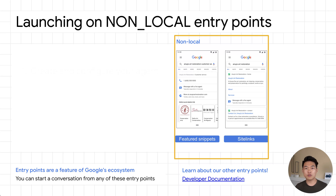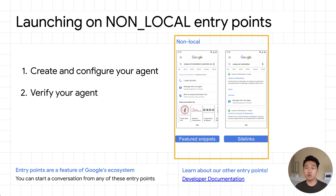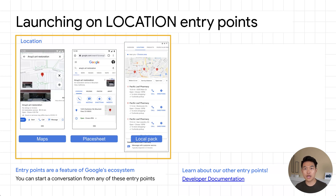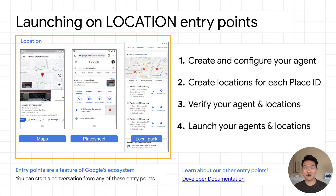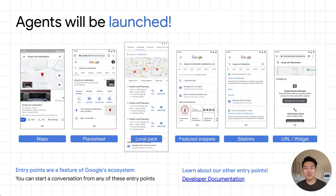To launch the agent on non-local entry points, ensure you have non-local set on the entry point config of the agent, and then launch that agent. You can use the same agent used for brand-managed entry points. For launching the agent on the location entry point, ensure the agent has locations set on the entry point config, and then, assuming all your locations are already created, initiate a verification request on a single location. Our support team will look at the request, and if they see multiple locations associated with the agent, they will try to verify all of them. Once the agents and locations are verified, you can launch them separately. Within a few hours, you should be able to find the search listing showing the chat button on specified entry points. Remember that even if you launch all entry points, not all may be available if the business doesn't already have them.